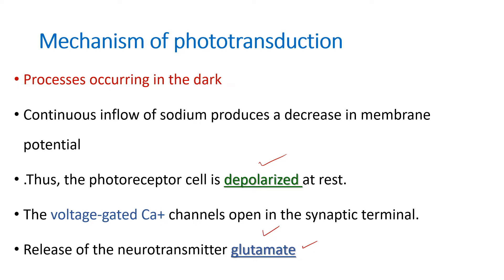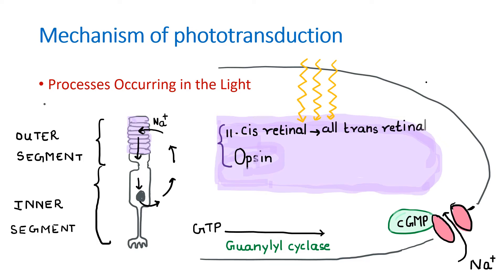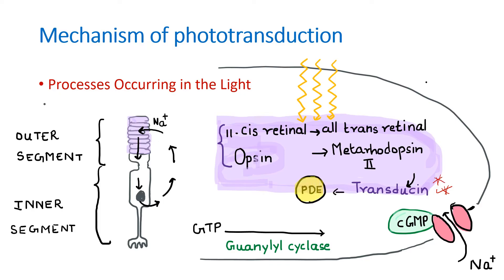Now, what happens when light falls onto this photoreceptor? Rhodopsin contains 11-cis retinal and opsin. In the presence of light, 11-cis retinal is converted to all-trans retinal and opsin undergoes a conformational change to form metarhodopsin 2. Because of this, there is activation of a G protein called transducin. Transducin then activates phosphodiesterase (PDE), and phosphodiesterase converts cGMP to 5-GMP.